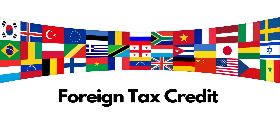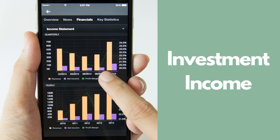Taxes paid to a foreign government can be offset by a foreign tax credit, which helps eliminate potential double taxation of foreign income. The federal government also taxes non-residents of Canada on certain income earned from Canadian sources, such as investment income.